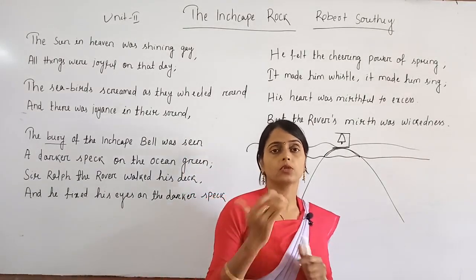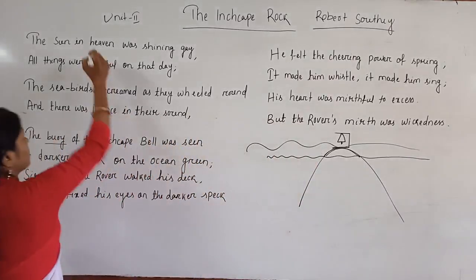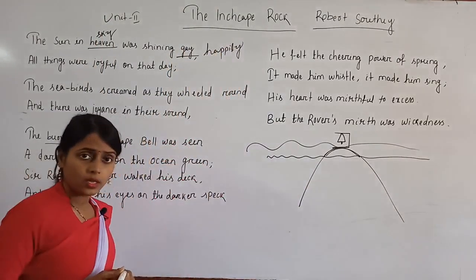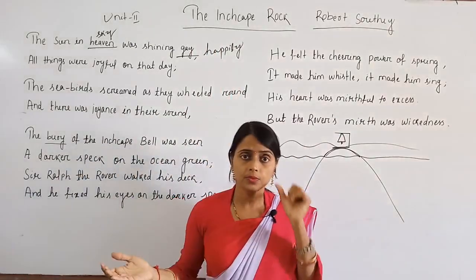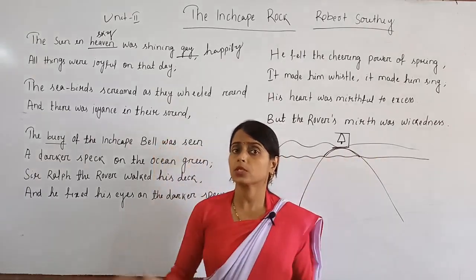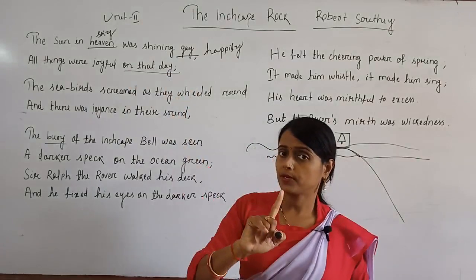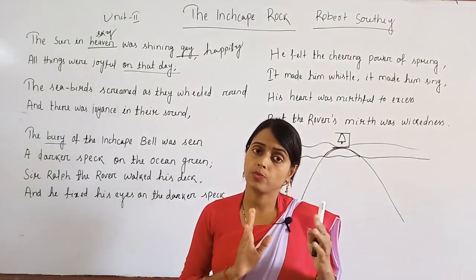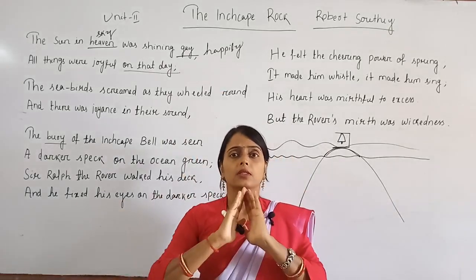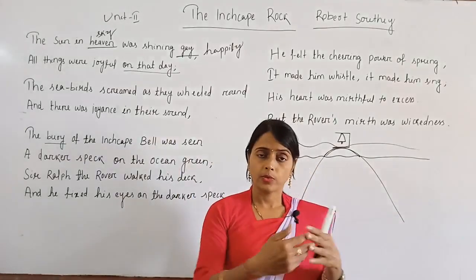That was the theme of Unit 1. Now coming to Unit 2: 'The sun in heaven' — here 'heaven' refers to the sky. The sun was shining brightly; it was not a rainy season, no black clouds. Everything was perfect and joyful on that particular day — the same day referred to in Unit 1. There was happiness in the surrounding atmosphere.